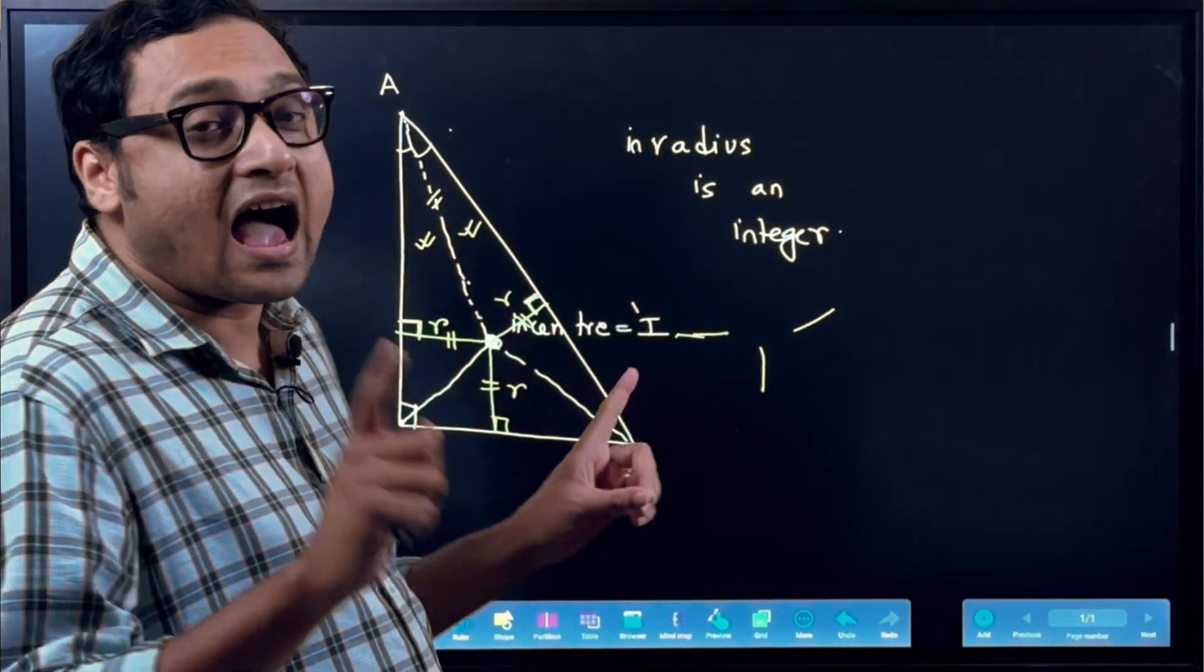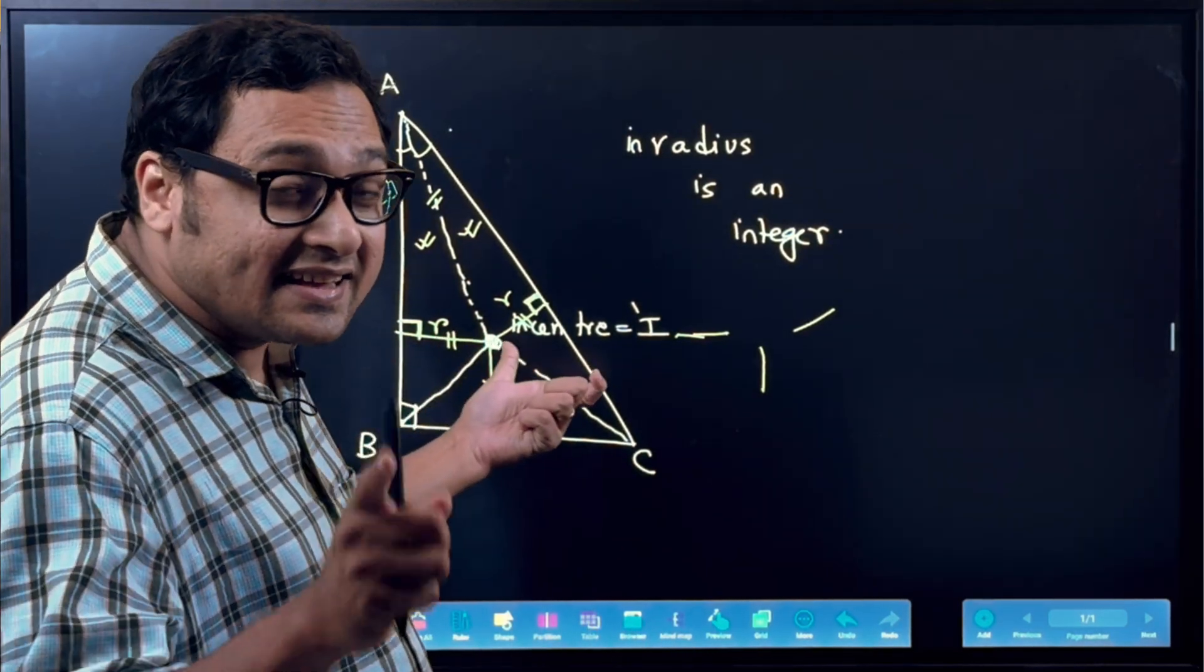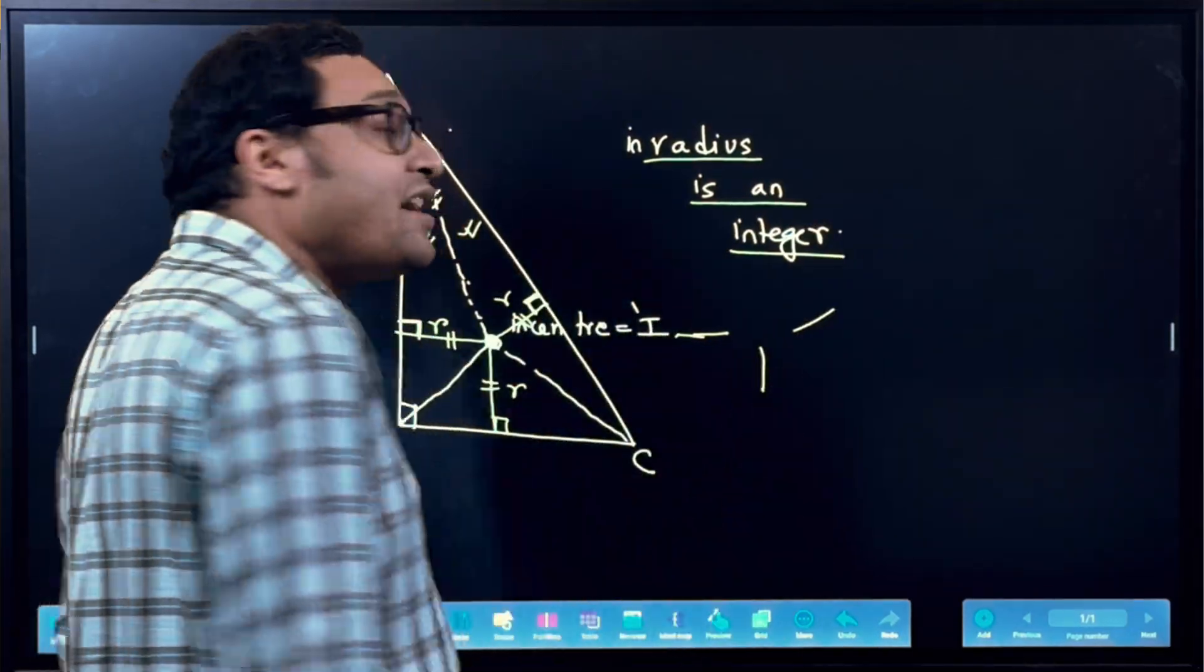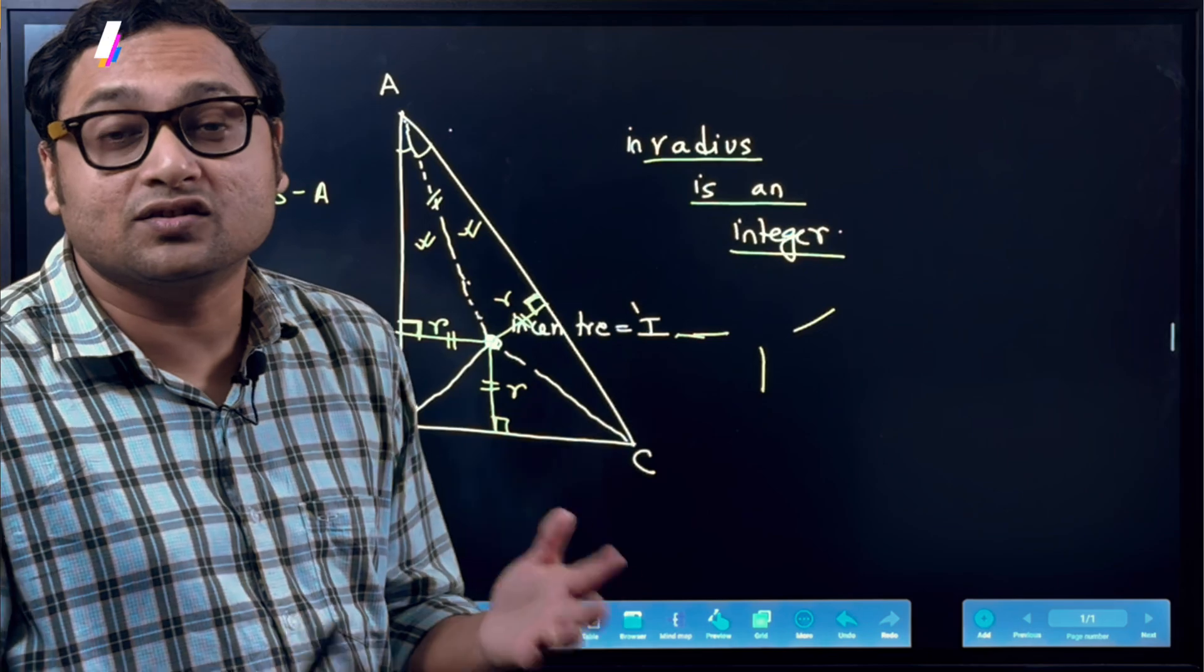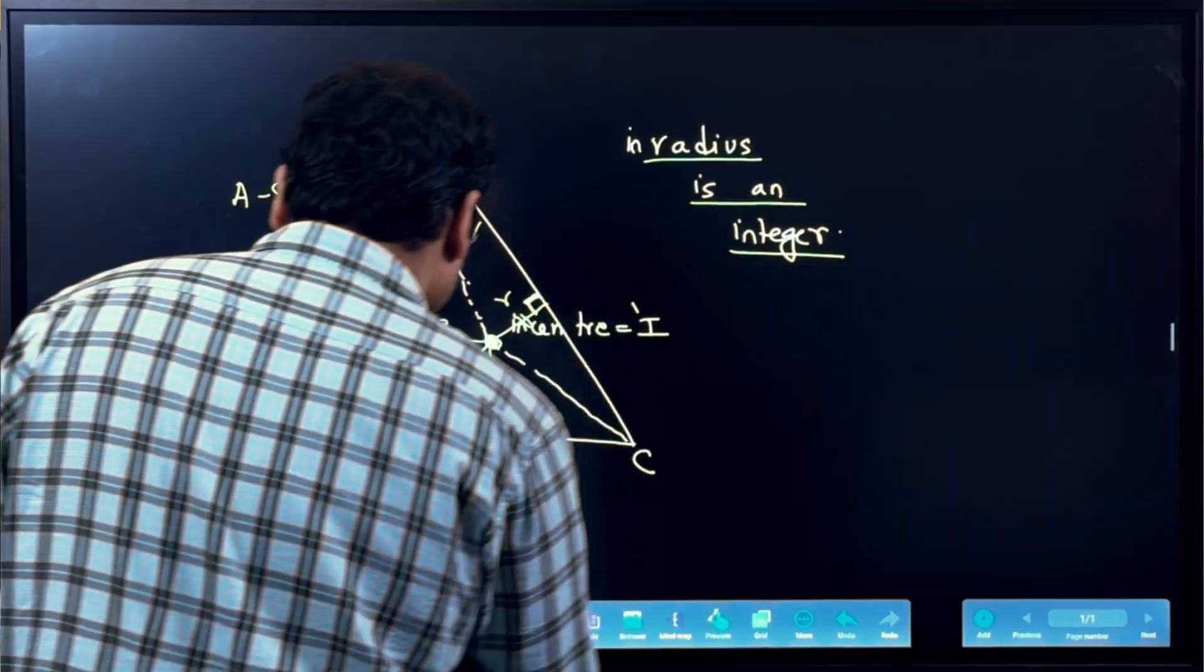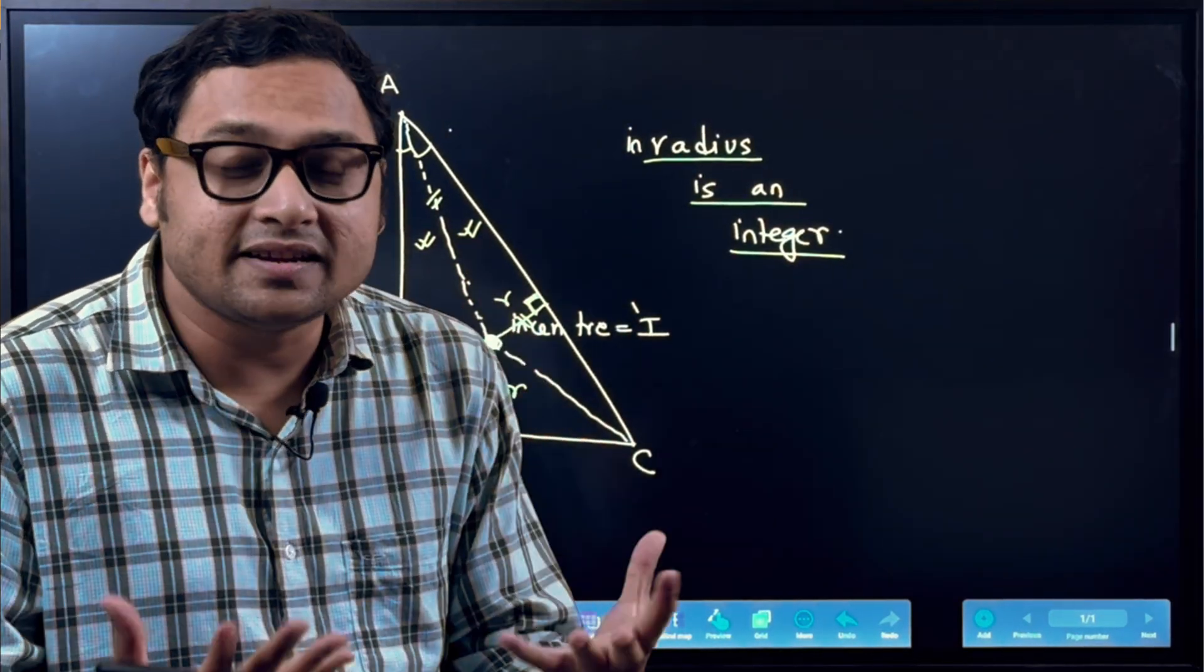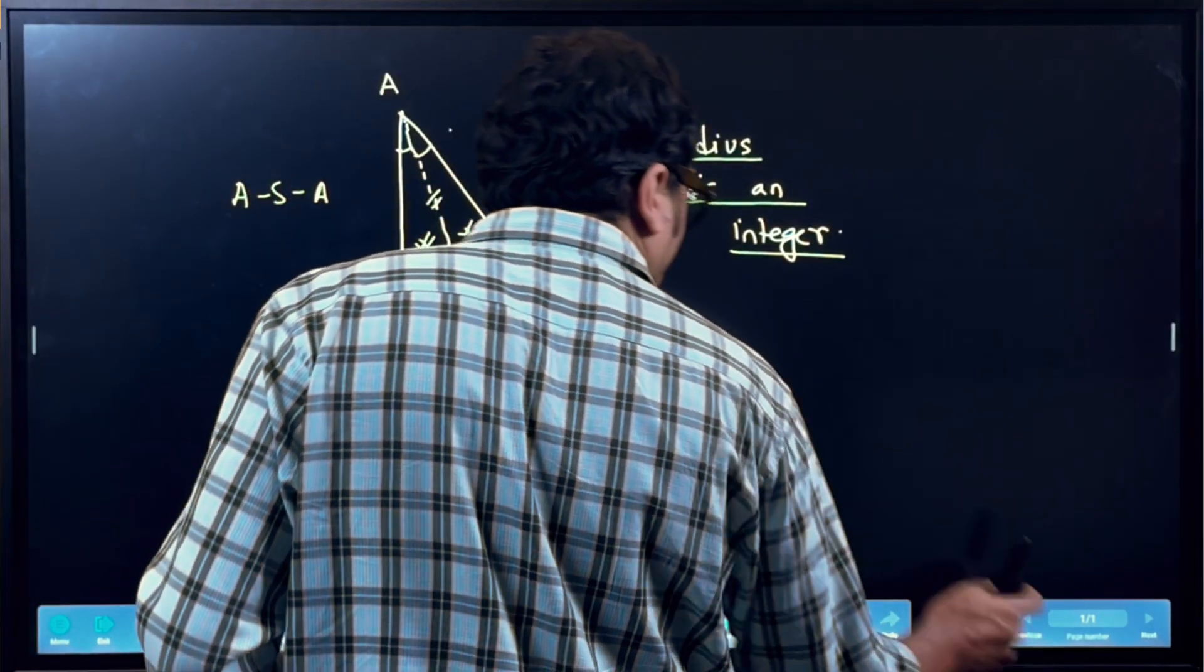Here, I want to show that this in-radius is an integer. It's an integer if the sides of a right triangle are also integer. Okay, so let's see why that would be true. So before we do that, we want to relate the in-radius with the sides of the triangle.